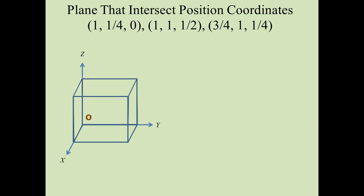Next, we have to find the plane that will intersect the position coordinates (1, 1/4, 0), (1, 1, 1/2), (3/4, 1, 1/4). First, we find these position coordinates in the figure. For the first position coordinate, we move 1 along the x-axis, 1/4 along the y-axis, and 0 along the z-axis — this is position coordinate (1, 1/4, 0). For the second, we move 1 along the x-axis, 1 along the y-axis, and 1/2 along the z-axis — this is position coordinate (1, 1, 1/2).